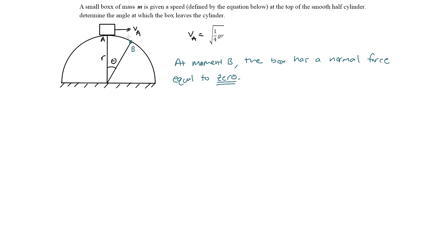The first thing we're going to do is draw the free body diagram at b. We can consider this box as a particle — we just treat it as a point in space. At point b, I'm going to draw the normal force acting on the object. I'll assume there is a normal force for now, so we have the normal force N and the weight of the object. Since this is sliding against a smooth half cylinder, there's no frictional force acting on the object.